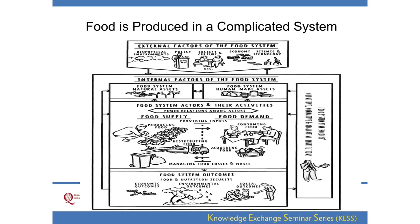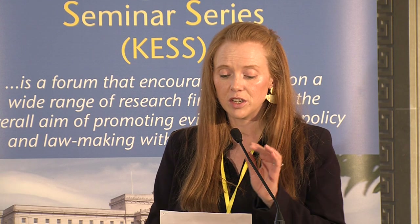But ultimately, the ideal outcome of the food system is food security, or food and nutrition security. Here we have a definition of it, and there are three things I'd like to really focus on in this definition.